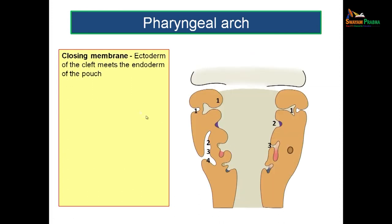The ectodermal cleft is otherwise known as pharyngeal cleft or pharyngeal groove. Similarly, the endodermal pouch on the inner aspect is known as pharyngeal pouches. These clefts and pouches are seen between the arches. All together you have six arches in the beginning, but the fifth arch usually disappears, so ultimately there will be only five arches.